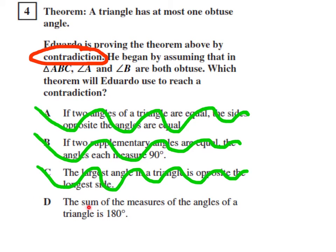And, finally, D, the sum of the measures of the angles of a triangle is 180 degrees. Now, this one here, that's what we're talking about. That one will use this definition.